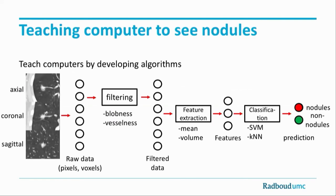It looks a little bit like this: we have our voxel data. This voxel data is filtered to enhance certain features, for example vessels or nodules. Then these features are quantified and extracted, and ultimately a classifier says whether something is a nodule or not a nodule, which helps us predict where a nodule in a chest CT would sit.